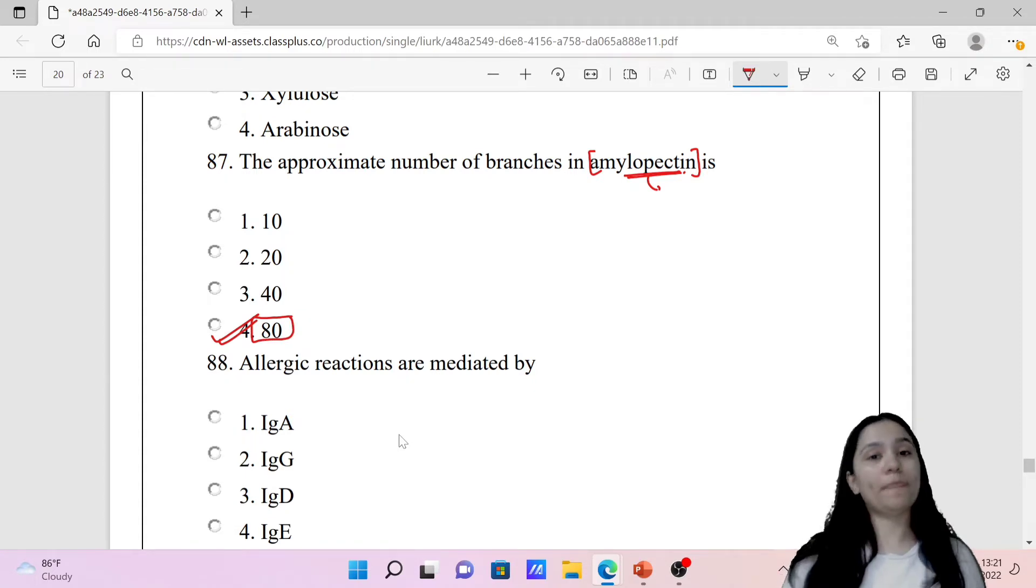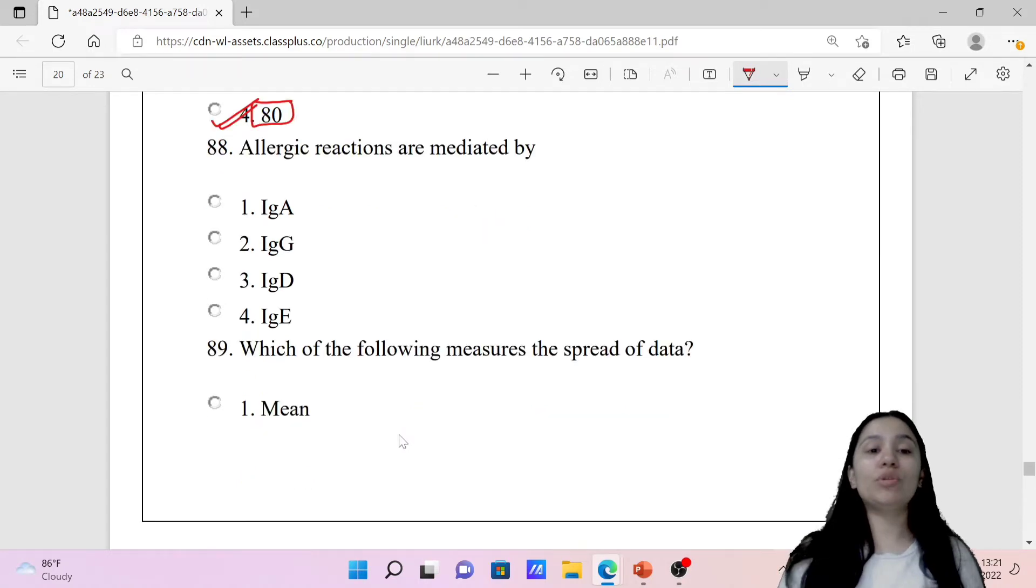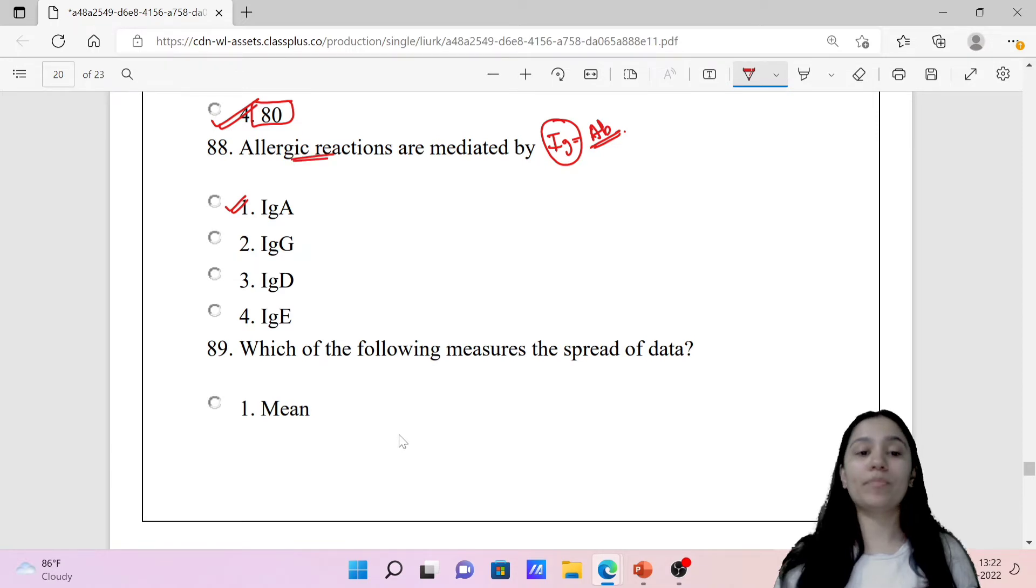Question 88: Allergic reactions are mediated by which immunoglobulin? IG stands for immunoglobulin, which is antibodies. The correct option is IgE. IgE mediates allergic reactions, so option fourth is your correct option.